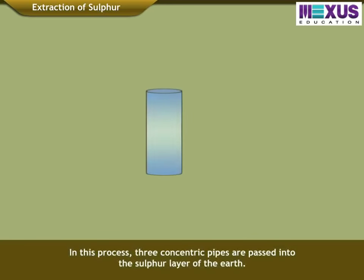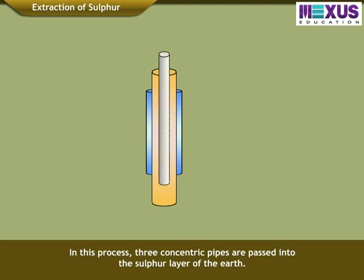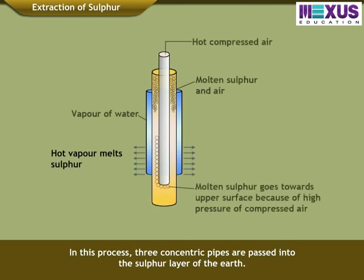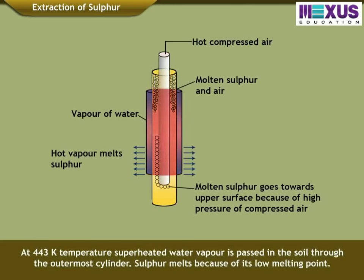In this process, three concentric pipes are passed into the Sulphur layer of the earth. At 443 Kelvin temperature, superheated water vapour is passed into the soil through the outermost cylinder. Sulphur melts because of its low melting point.